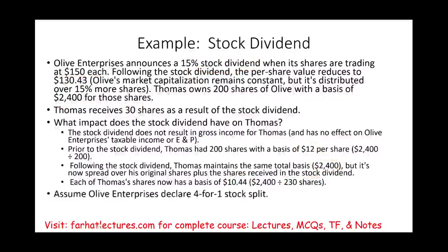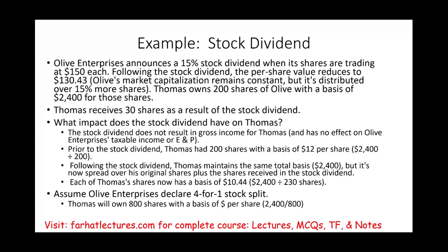Now let's assume Olive Enterprises declares a 4-for-1 stock split. Thomas would have 800 shares rather than 200. The total basis remains the same — Thomas did not pay for the additional 600 shares. We take $2,400 spread over 800 shares, giving a stock basis of $3 per share.